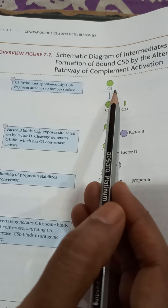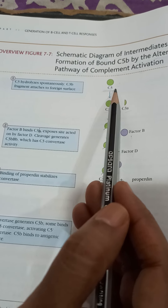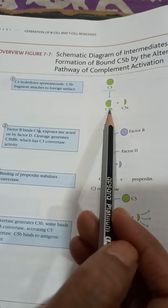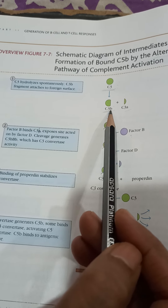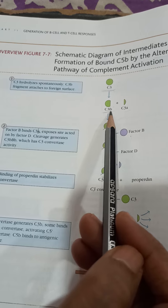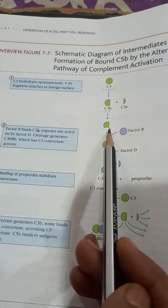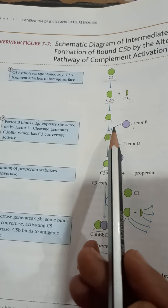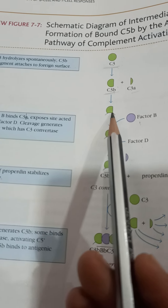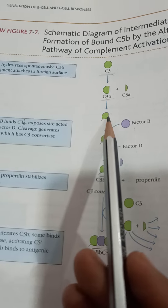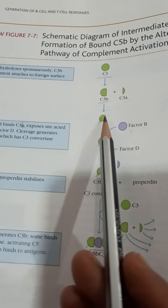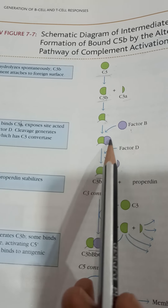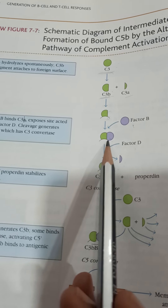A few molecules of C3 will undergo spontaneous hydrolysis very slowly, and the larger fragment of this cleavage, that is the C3b fragment, attaches to the foreign surface. After attachment, this exposes C3b to give a site which can be acted upon by Factor B. Factor B will then join C3b.